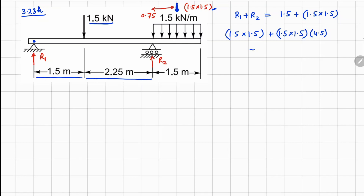This moment will be balanced by your R2 moment, which is at a distance of 4.5. From this we can solve for R1 and R2, giving R1 = 0.45 kN and R2 = 3.3 kN.